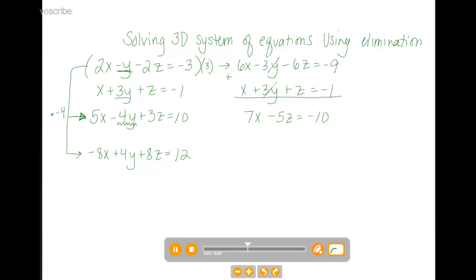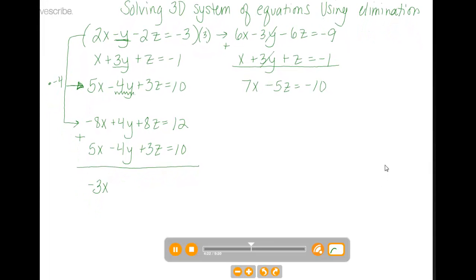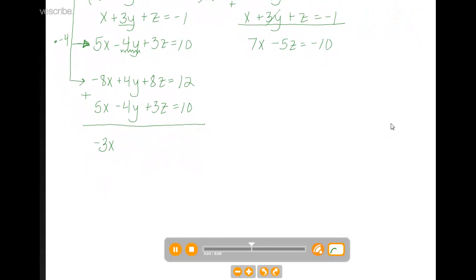Notice all of our signs from our original equation switched because we were multiplying by a negative. I'm now just going to rewrite that equation with the arrow right underneath it. So we can add neatly. When we add, negative 8x plus 5x is negative 3x. The 4y plus the negative 4y, those eliminated. And you have 8z plus 3z is 11z equals 12 plus 10 is 22.